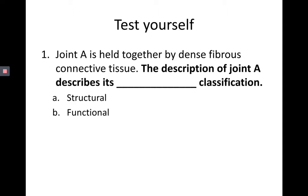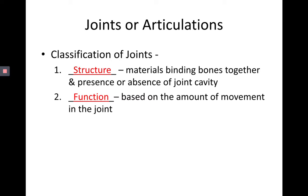Let's test ourselves. Joint A is held together by dense fibrous connective tissue. The description of joint A describes its blank classification. The answer is structural, because the structural classification of joints refers to the materials binding bones together and the presence or absence of a joint cavity. Its function, on the other hand, is all about movement — it's based on the amount of movement in the joint.